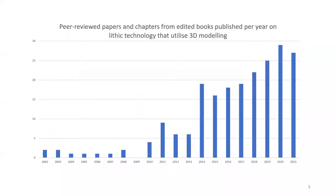If qualitative reasons aren't enough, let's look at the quantitative ones. Since the earliest peer-reviewed published paper I've been able to find in 2002, there have been at least 190 peer-reviewed papers and edited chapters which utilise 3D modelling to illustrate or analyse stone artefacts — and that's mostly the latter. That number has been increasing steadily since 2015, and 2021 is on track to be a record year, even with COVID impacting the last 18 months of research. It feels like every week I find another paper or research team using this technology.